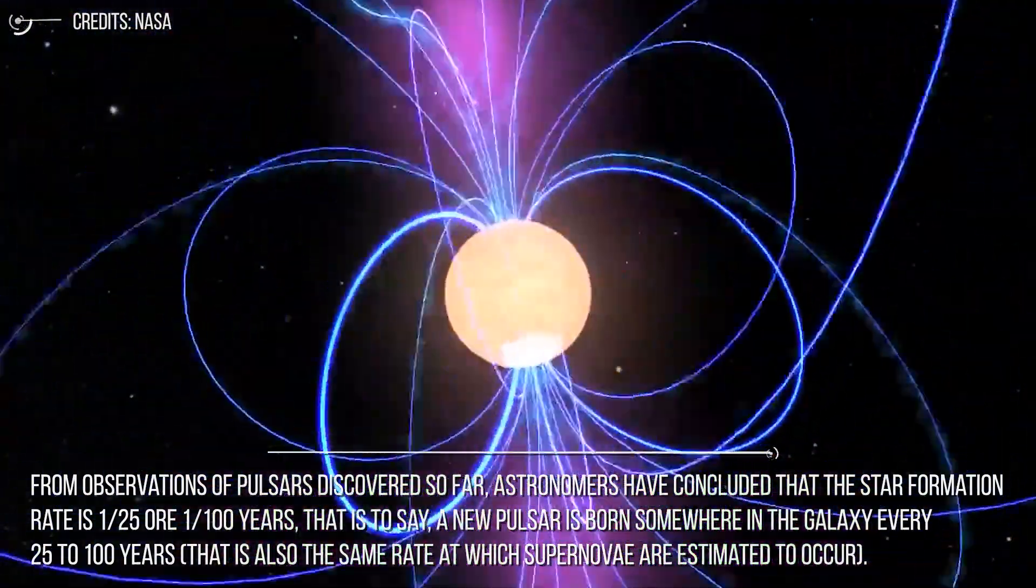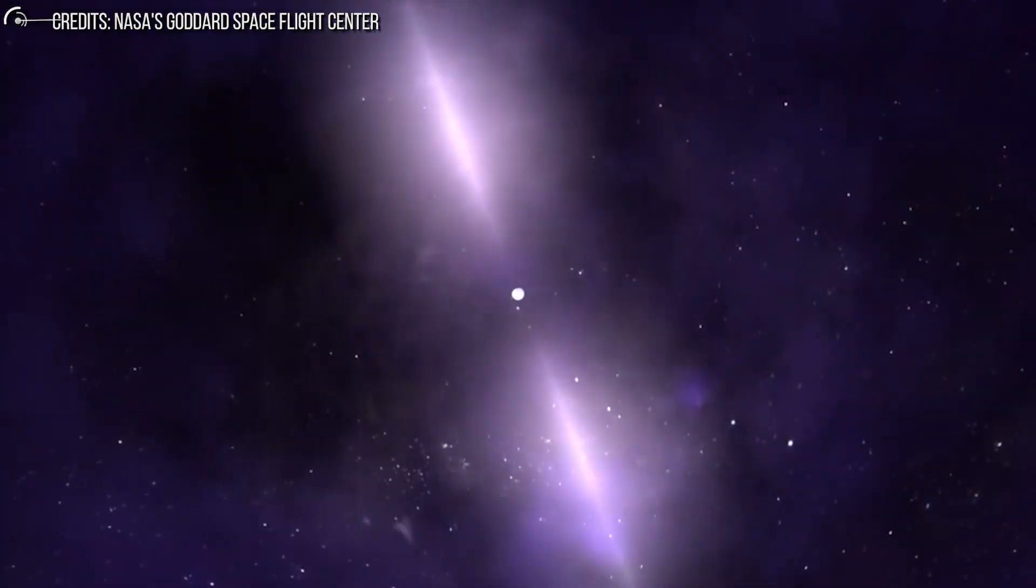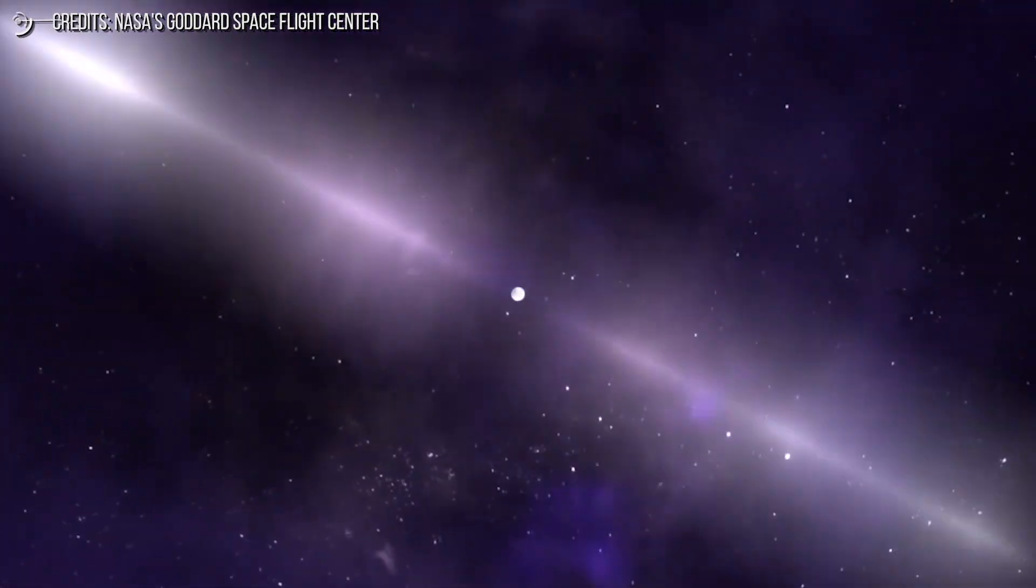But we can't see as many pulsars as we predict. Why is that?